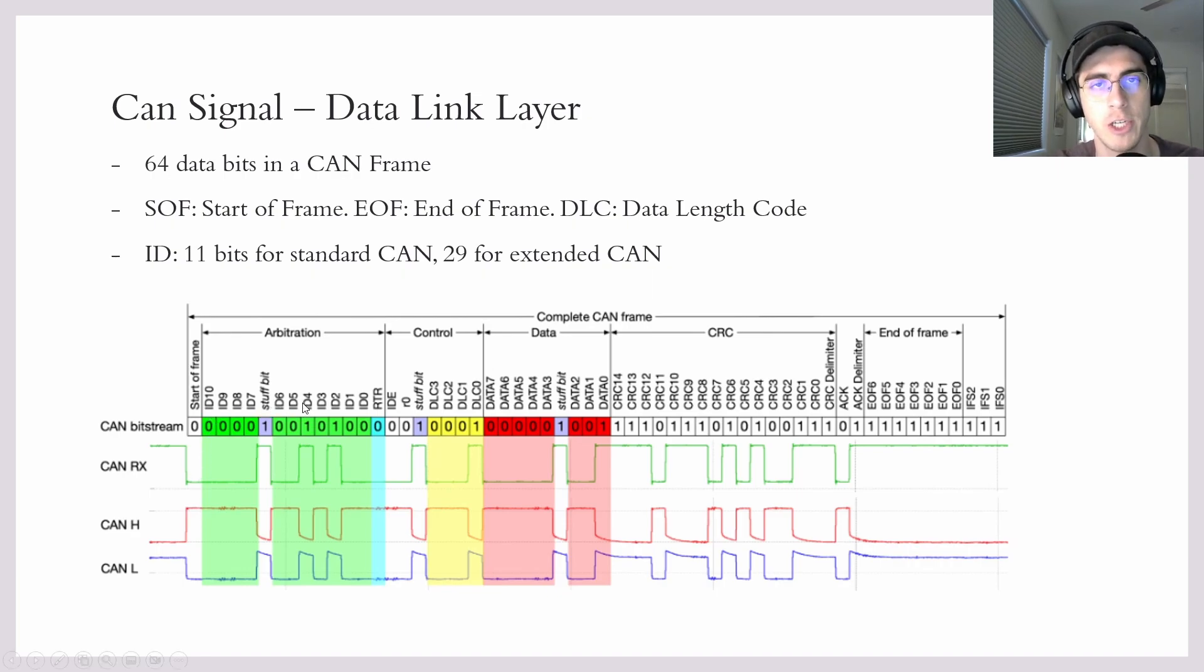We now have the arbitration phase. So as we talked about earlier, there could be several CAN nodes that want to transmit something at the same time. So this sequence of bits will just determine which CAN node will actually get access to the bus.